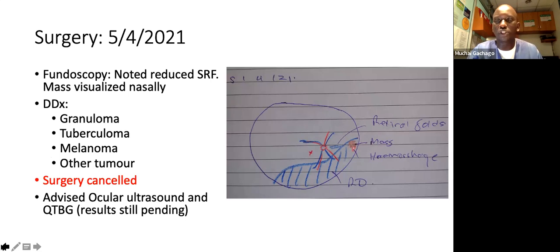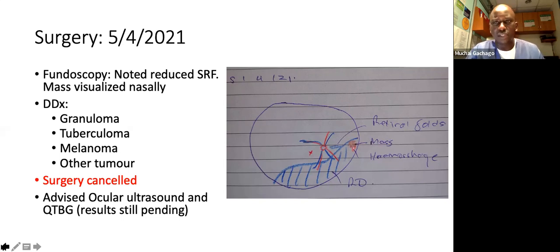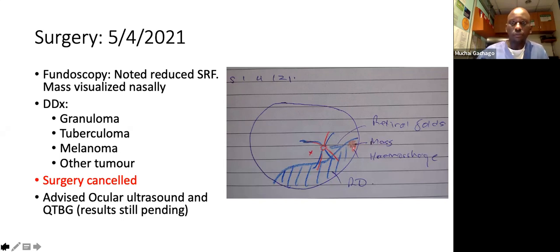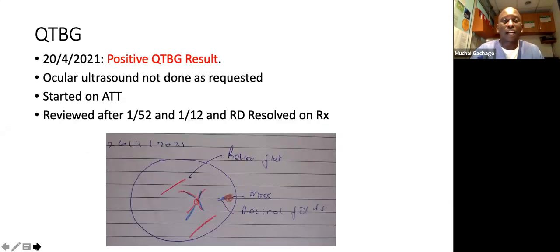There was still a retinal detachment but it was not as massive as before. So now we had different differentials — we thought of possible granuloma, tuberculoma, melanoma, or possibly other tumors, considering this was a 24-year-old male with what appeared to be some inflammatory reaction associated with his retinal detachment. The surgery was canceled as this was now established to be a medical retinal detachment. We advised ocular ultrasound and the Quantiferon TB Gold, which had still not been done. The Quantiferon test came back a couple of days later and was positive. The ocular ultrasound was still pending.